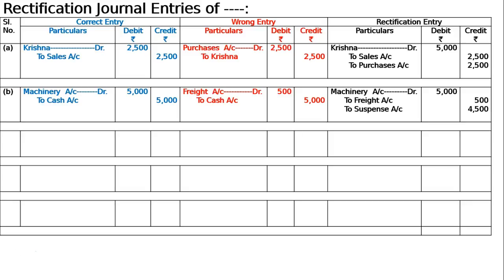The difference of Rs. 4500 will go to suspense account, because all other accounts excluding these two are correct. Hence the rectification entry is: machinery account debited 5000, to freight account 500 and suspense account 4500. Narration: freight paid on account of purchase of machinery Rs. 5000, debited to freight account as Rs. 500, is rectified.